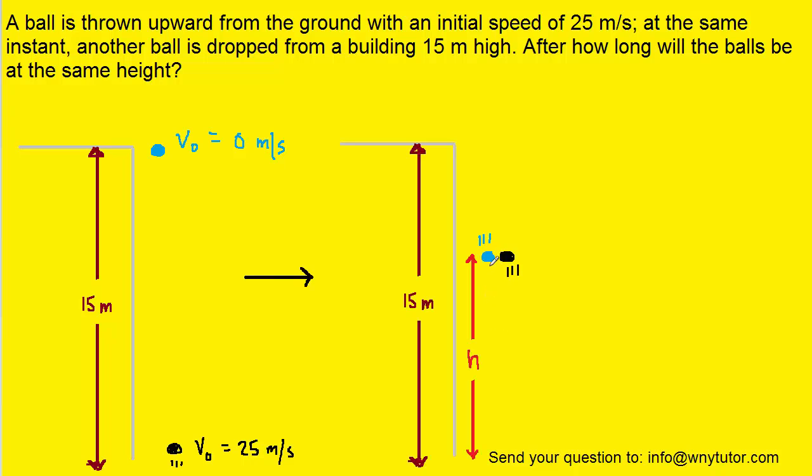Now at some later time, the ball that was dropped and the ball that was thrown upward are going to pass each other. We don't know that height; we've marked it as h on the diagram. Hopefully we can see that because the total length here is 15 meters and this length here is h, that this length right here would be represented by 15 minus h.